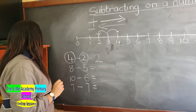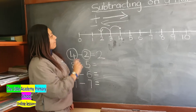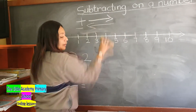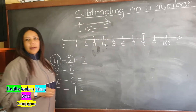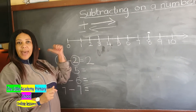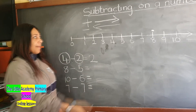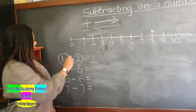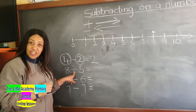Let's take the second example, which is 8 take away 5. We find the number 8 on our number line. There we go — there's our number 8 over there. Remember, whenever we are subtracting, we move backwards, and when we are adding, we move forward. So we found the number 8 on our number line.